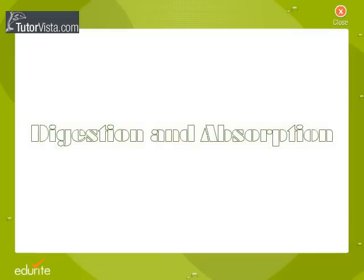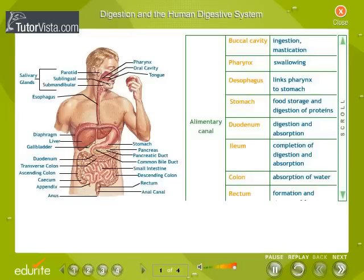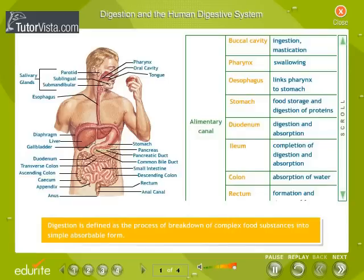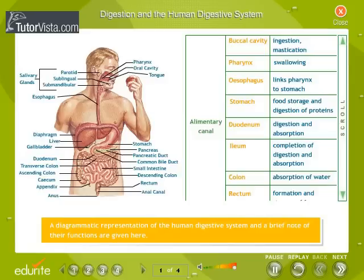Digestion and the human digestive system. Food is one of the basic requirements of all living organisms. Within the body, food is digested by the digestive system in order to release energy. Digestion is defined as the process of breakdown of complex food substances into simple absorbable form. The human digestive system consists of the alimentary canal and associated glands, with a diagrammatic representation and brief notes on their functions provided here.